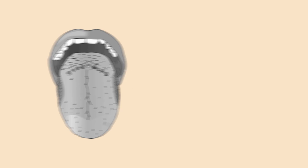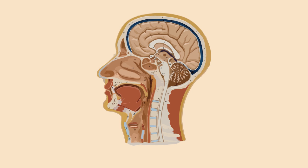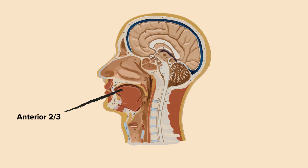Here's the tongue, and here's the tongue in cross-section. The easiest way to help you remember this is to divide the tongue in three parts: the anterior two-thirds, the posterior one-third, and the extreme posterior of the tongue. But for simplicity, we'll just call this part of the tongue the back.